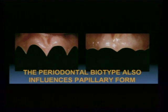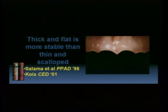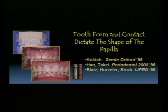Periodontal biotype is critical: the thick and flat biotype is going to be more predictable than the thin and highly scalloped. Both Kois and Salama have taught us this regarding expected outcomes related to periodontal biotype. Additionally, tooth form — the shape of teeth or our ability to modify their shape — has a strong influence upon papillary form.